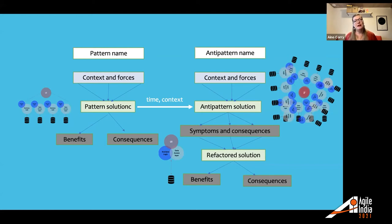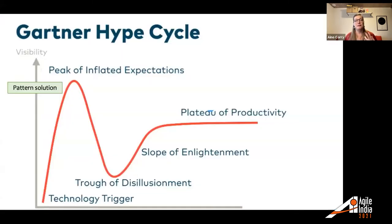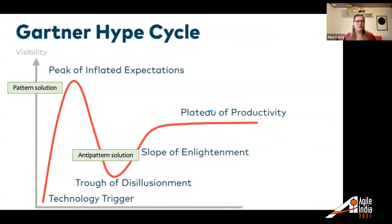Patterns go through a Gartner Hype Cycle — like microservices, which went through a peak of inflated expectations where everybody wanted to apply them. Now we're at the trough of disillusionment, where many people realize they can't implement microservices well and it's actually worse than before. At some point it will reach the plateau of productivity, where microservices are used exactly in the right places and not overused.